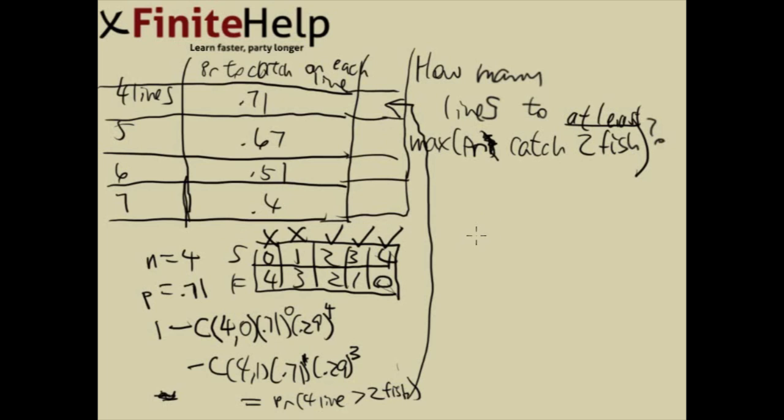And then for 5 fish, you are going to be doing the same thing. You are going to say n equals 5, and then p is going to be 0.67 this time. So you create the table again. 0, 1, 2, 3, 4, 5. Number of successes, number of failures, 5, 4, 3, 2, 1, 0.